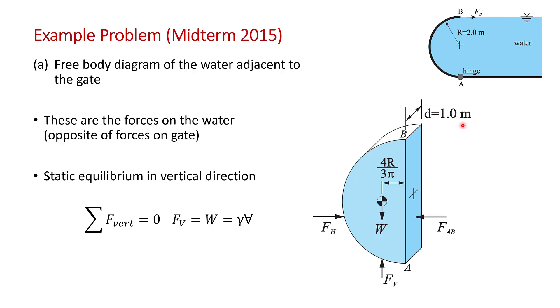The volume is going to be pi r squared divided by 2, because it's half a circle, times depth. So FV is gamma times pi r squared upon 2, times depth.